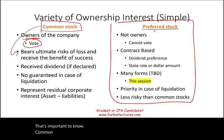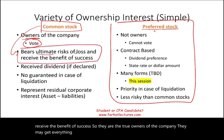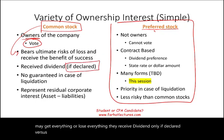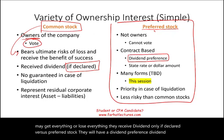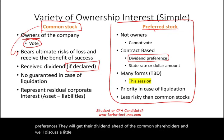Common shareholders bear the ultimate risks of loss and receive the benefit of success — they are the true owners of the company. They may get everything or lose everything. They receive dividends only if declared. Preferred stock, on the other hand, has a dividend preference, meaning they get their dividend ahead of common shareholders. We'll discuss dividend preference and how to compute the dividend amount in this session.